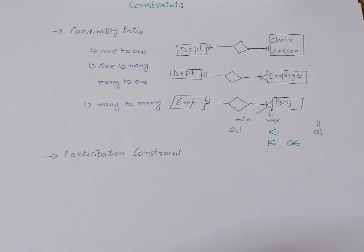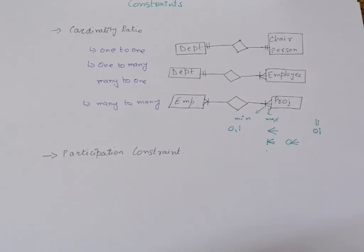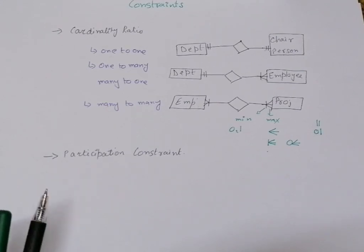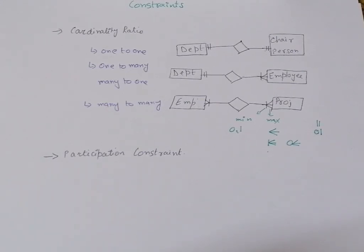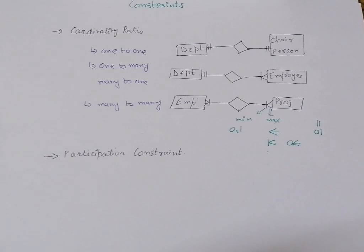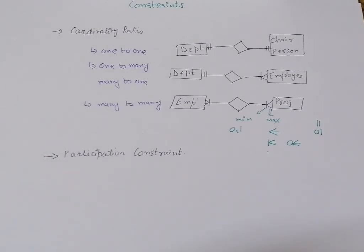The same notation applies for unary relationships. The second type of constraint is participation constraint. Participation constraint basically specifies whether the existence of an entity depends on it being related to another entity — in other words, whether all instances or only part of the instances are participating in a particular relationship.